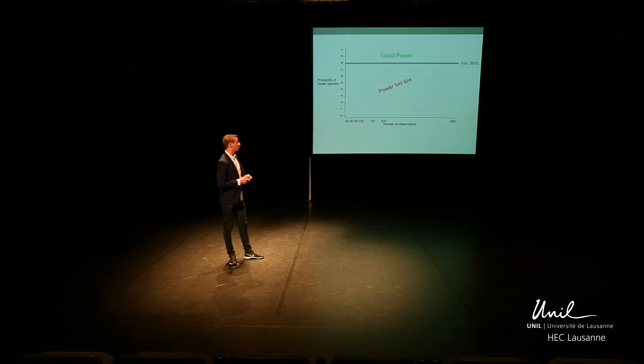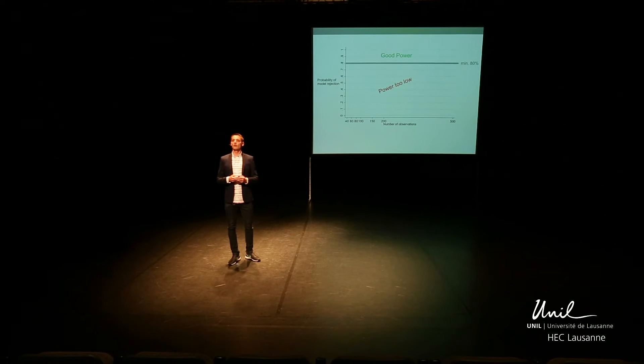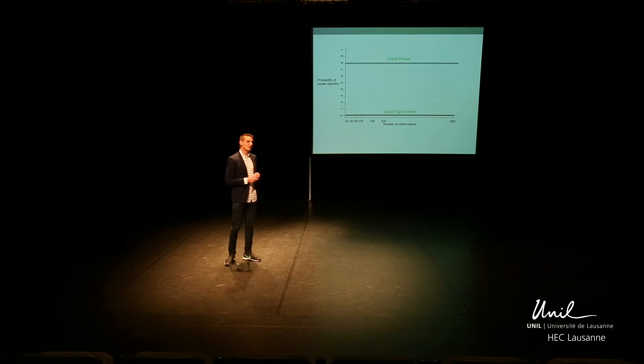Contrarily, if we produce a car that differs from the buyer's order, a good test should raise the flag and say the car is no good. The ability of a test to catch an incorrect model is called power in statistics. To be considered powerful, a test should reject at least 80% of the incorrect models. So to summarize, a good test should have both good type 1 error and good power, and this at all sample sizes.